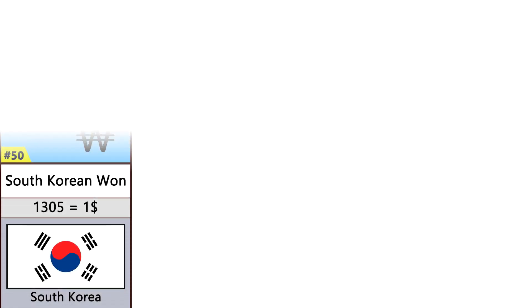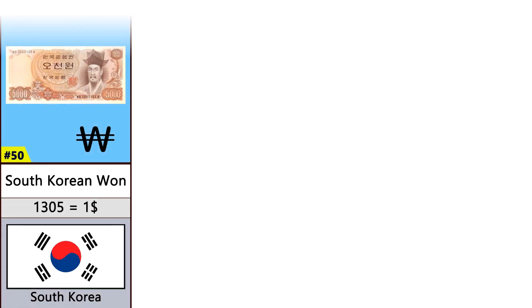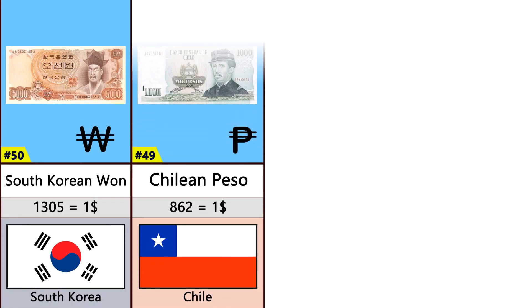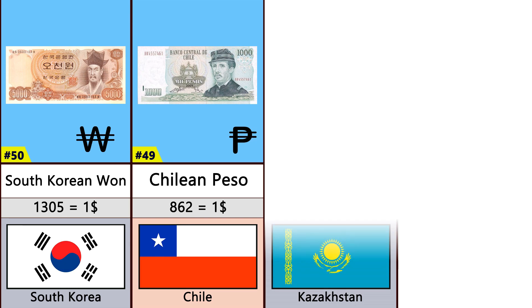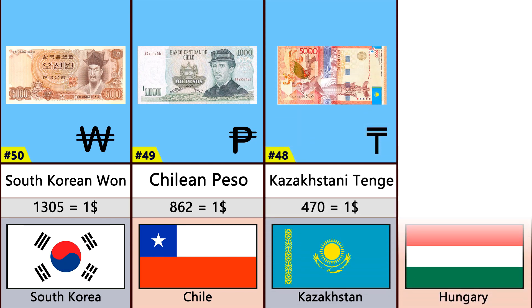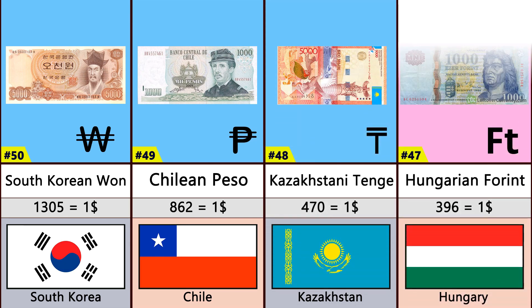Most Valuable Currencies in the World 2023. Number 50: South Korean Won. Number 49: Chilean Peso. Number 48: Kazakhstan Tenge.